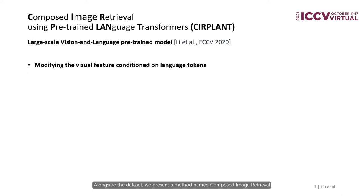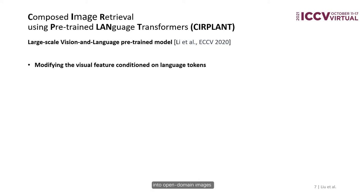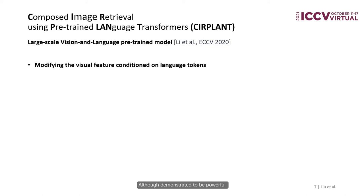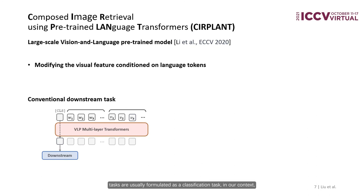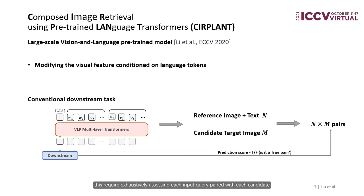Alongside the dataset, we present a method named Composed Image Retrieval using pre-trained language transformers, which extends current methods into open-domain images by leveraging the knowledge of large-scale pre-trained vision-language models. Although demonstrated to be powerful in multiple tasks, previous work has yet to explore such models. We conjecture one reason being that existing domain-specific datasets cannot greatly benefit from pre-training on more complex open-domain images. Additionally, conventional downstream tasks are usually formulated as a classification task, which requires exhaustively assessing each input query paired with each candidate target before yielding the one with the highest prediction score, making validation very expensive.